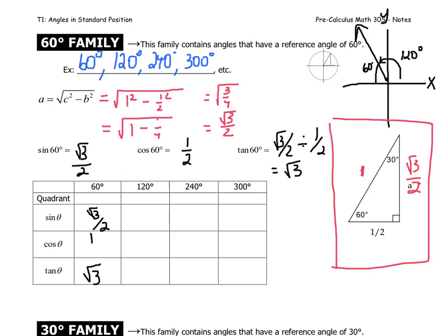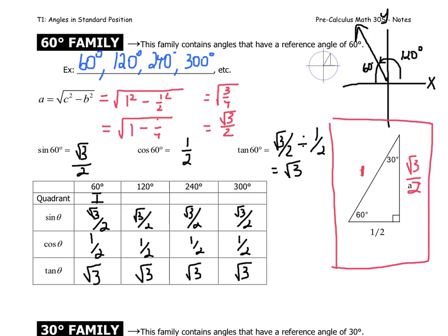Those are the exact values for the 60-degree angle, located in quadrant 1. All the sine, cosine, and tangent values for this family will remain the same — all the sine values are root 3 over 2, the cosines are all 1 half, and the tangents are all root 3. The cosine and tangent are negative for 120; the sine and cosine are negative for 240; and the sine and tangent are negative for 300. Interestingly, where the sine, cosine, and tangent are positive and negative is exactly the same as in the 45-degree family.